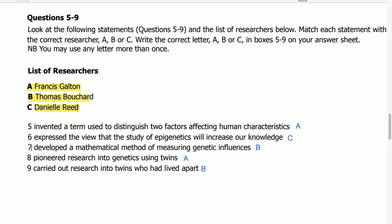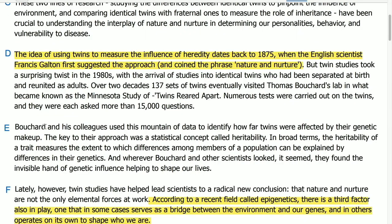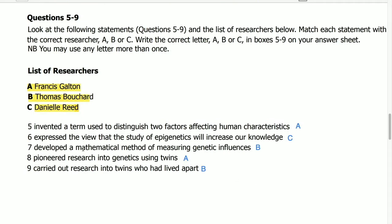Statement 7: developed a mathematical method of measuring genetic influences. Its answer is in paragraph D, lines 4 to 6: Bochard and his colleagues used this mountain of data to identify how far twins were affected by their genetic makeup. The key to their approach was a statistical concept called heritability. So this statistical concept is the mathematical method of measuring genetic influences. Its answer is B.